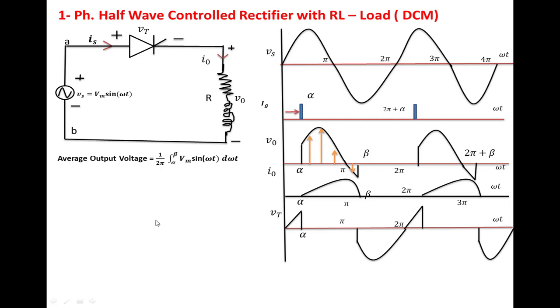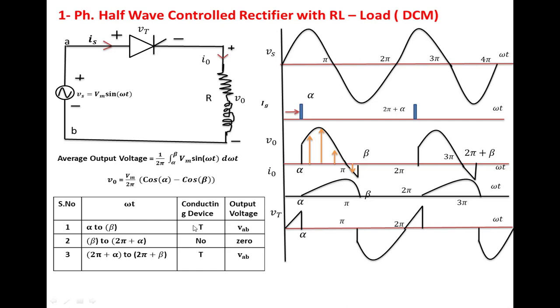If we compute this integration, we get V₀ = (Vm/2π)[cos(α) - cos(β)]. Now we present the circuit operation in table form. From α to β, the thyristor is conducting, and the output voltage is Vab.